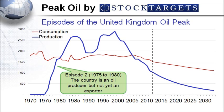Episode number two: from 1975 until 1980, the country is an oil producer thanks to the fields in the North Sea, but is not yet an exporter. From 1975 forward, the North Sea oil production ramps up quite fast, and production ultimately reaches the level of national consumption by roughly 1980.